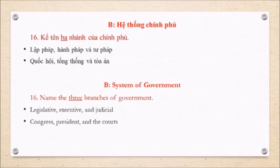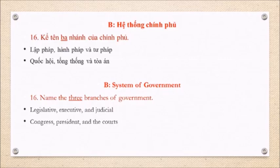B. System of Government. Question 16: Name the three branches of government. Legislative, Executive, and Judicial. Congress, the President, and the courts.